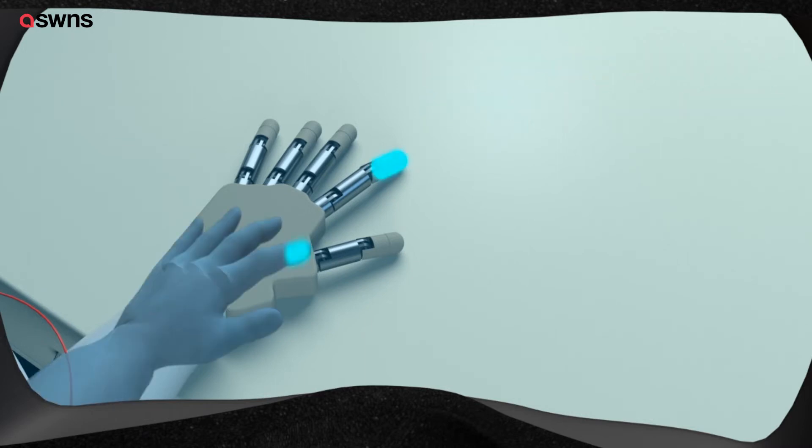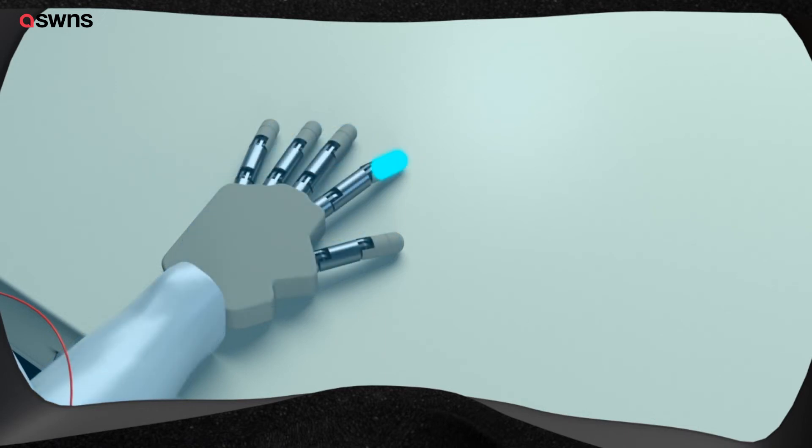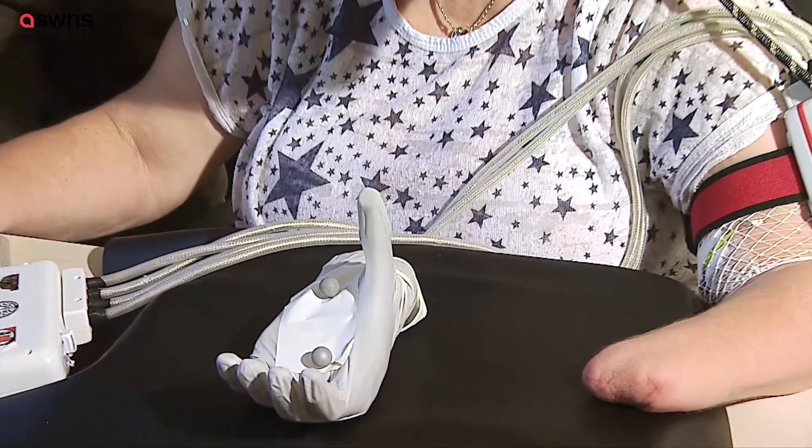One of the important results was that extension of the phantom limb lasted not only during the stimulation, but also ten minutes after the stimulation was ended. So the next step would be to test exactly the amount of stimulation we would need to make these effects permanent.